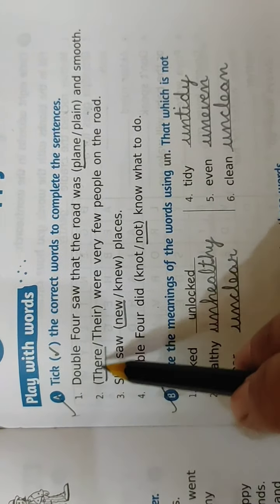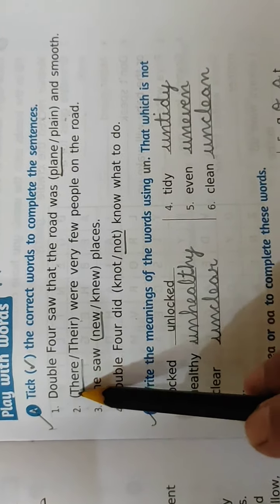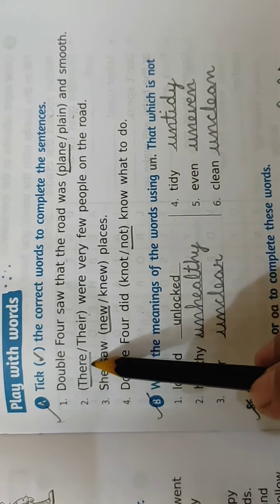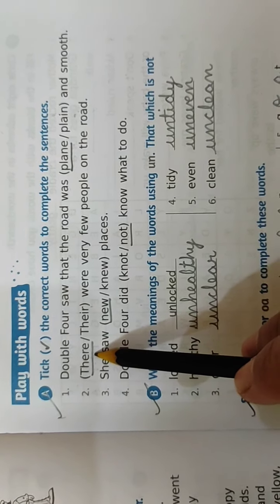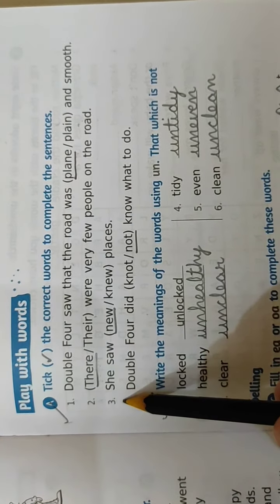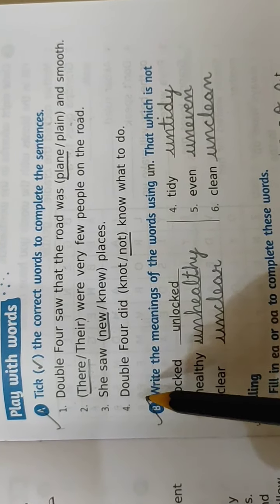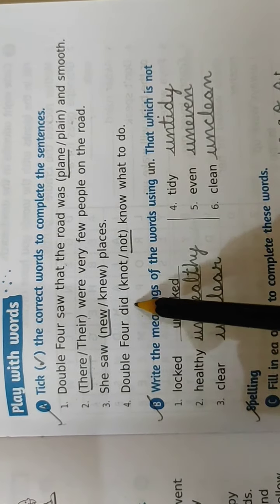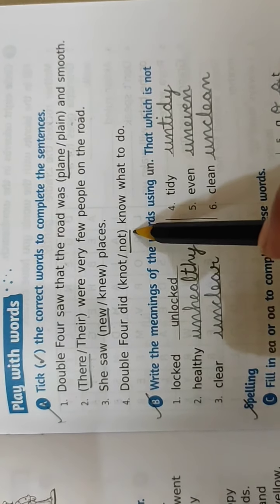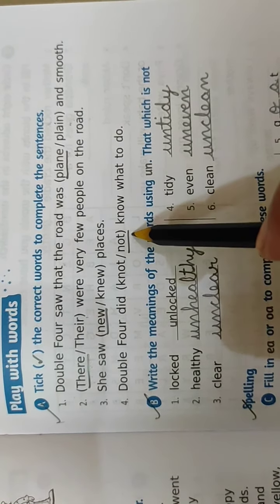Number 2 is, there were very few people on the road. Here, T-H-E-R-E is the correct answer. So underline T-H-E-R-E, there. Number 3 is, she saw new places. N-E-W, underline N-E-W, new. Number 4 is, Double 4 did not know what to do. N-O-T, not. The correct answer is N-O-T, not.